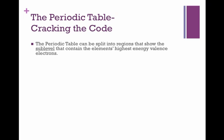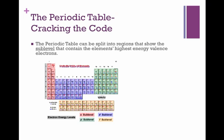The periodic table can be split into regions that show the sublevel that contain the elements' highest energy valence electrons. Remember that there are four sublevels: s, p, d, and f.